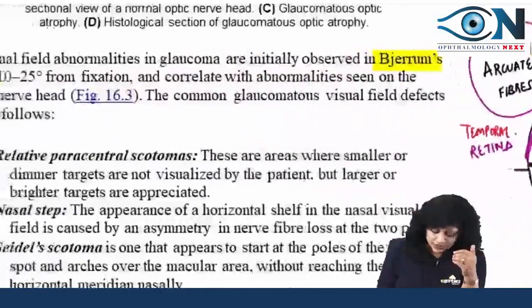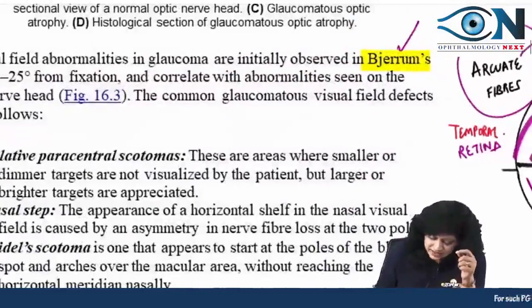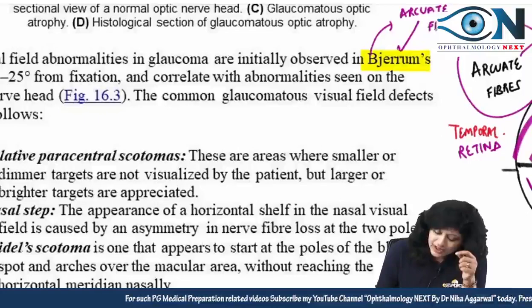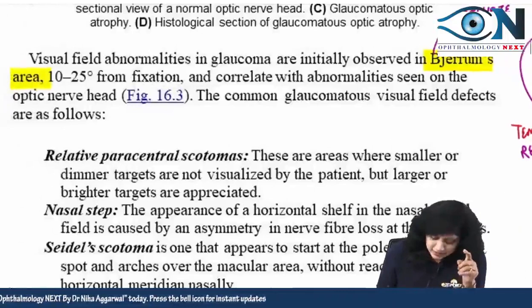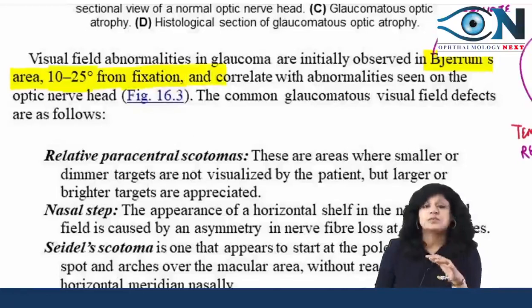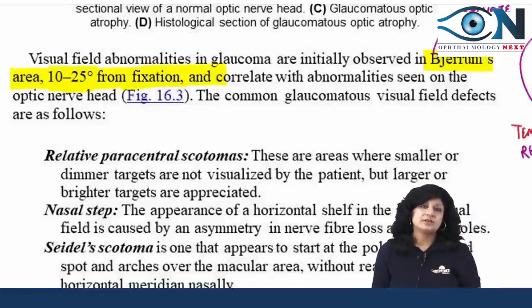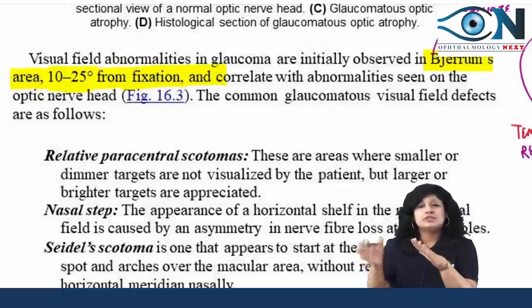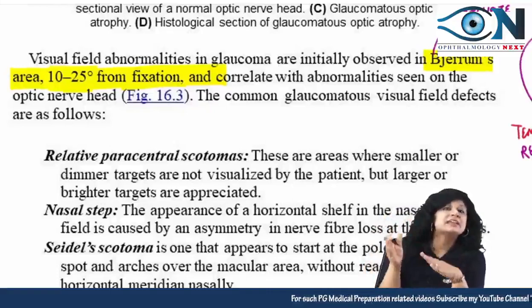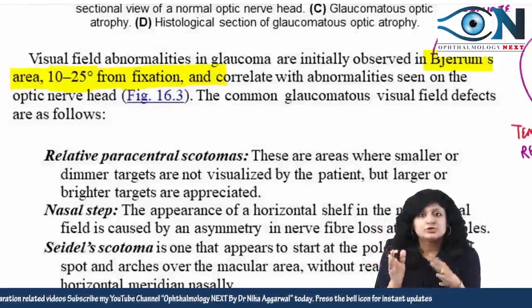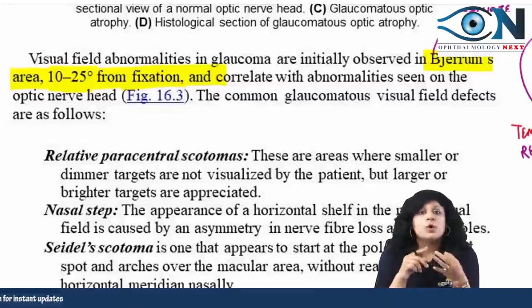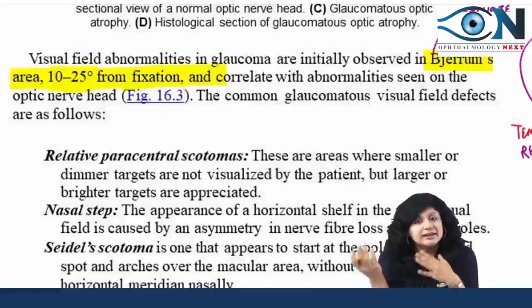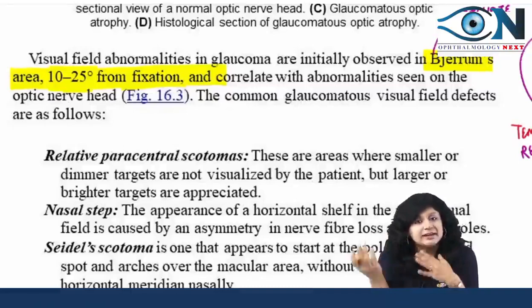Bjerrum's area is the arcuate fiber area — the arcuate fibers in the temporal retina from 10 to 25 degrees from fixation. This area is most sensitive to glaucomatous damage. The corresponding scotoma — the first visual field defect seen in glaucoma — is called Bjerrum's scotoma, corresponding to the nasal visual field. The temporal visual field is the last to be affected in patients of glaucoma.